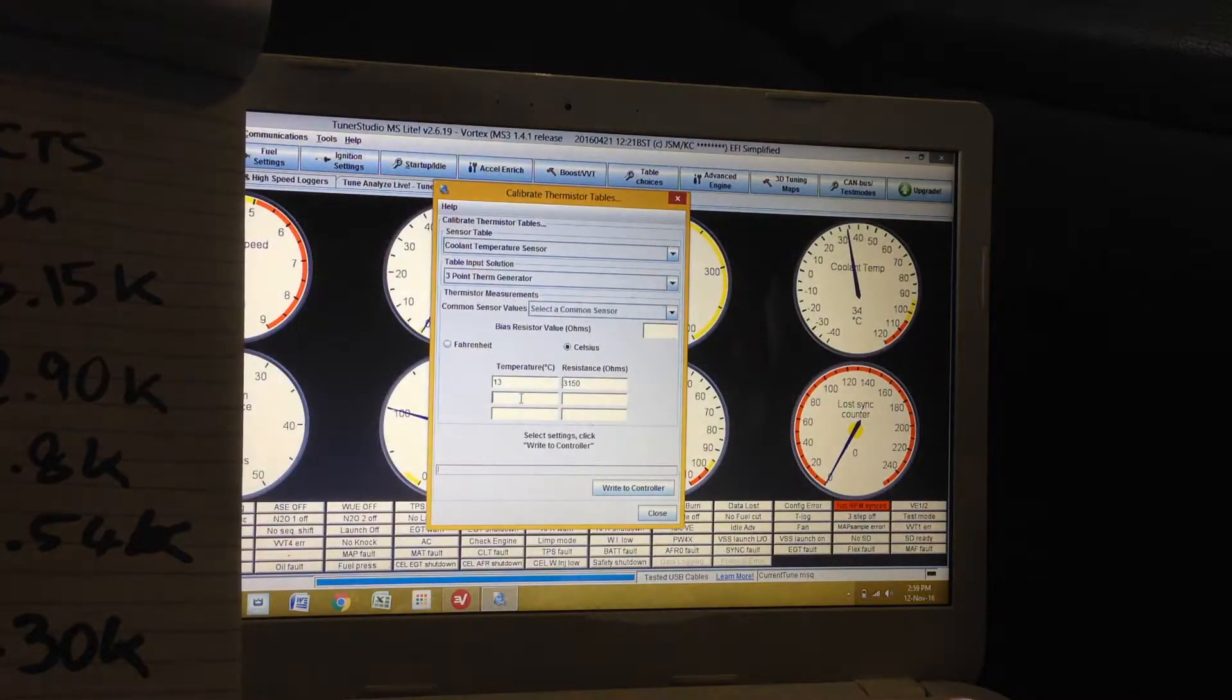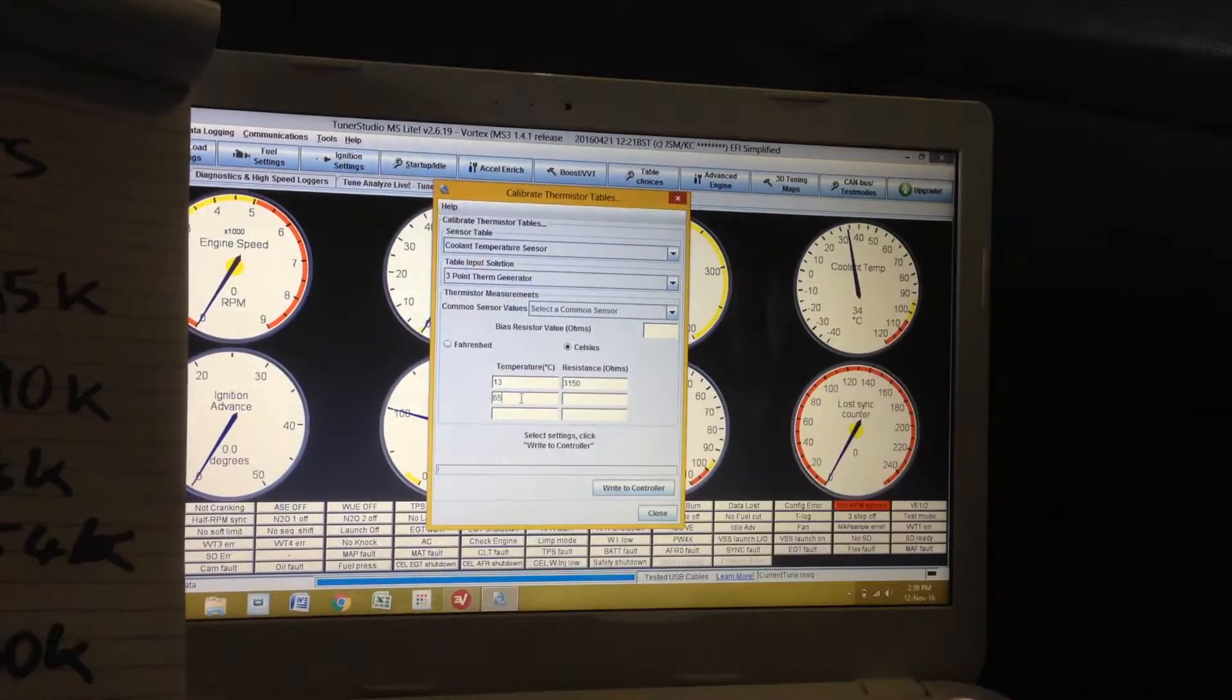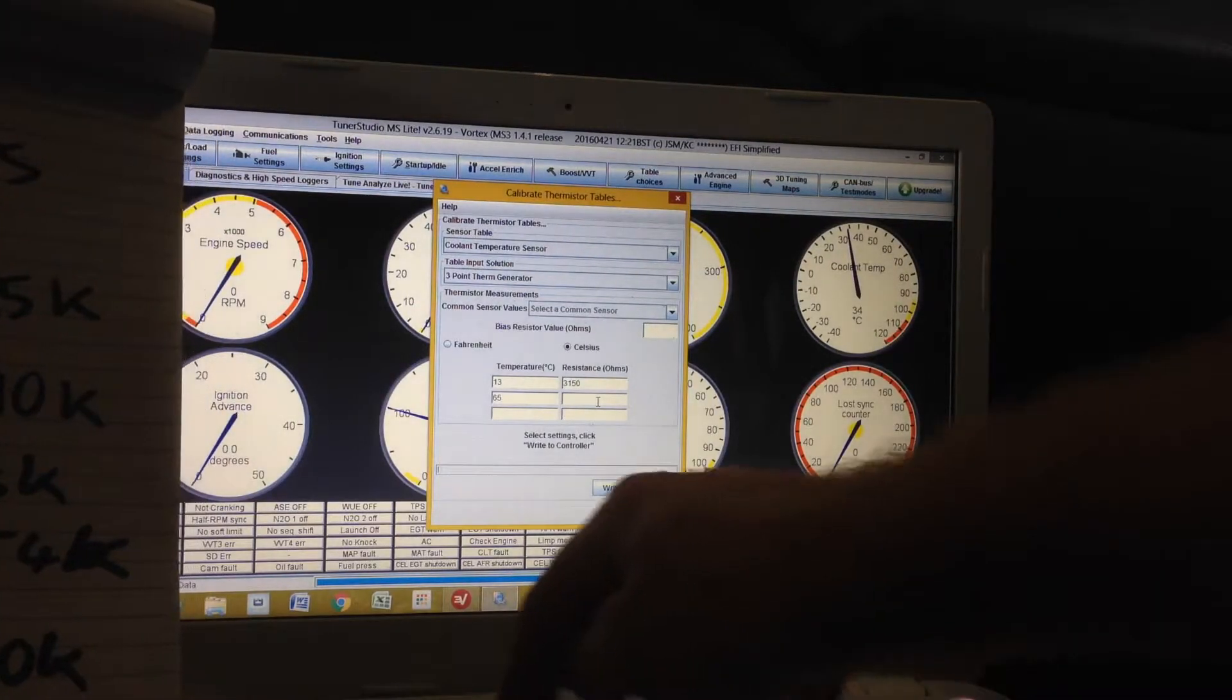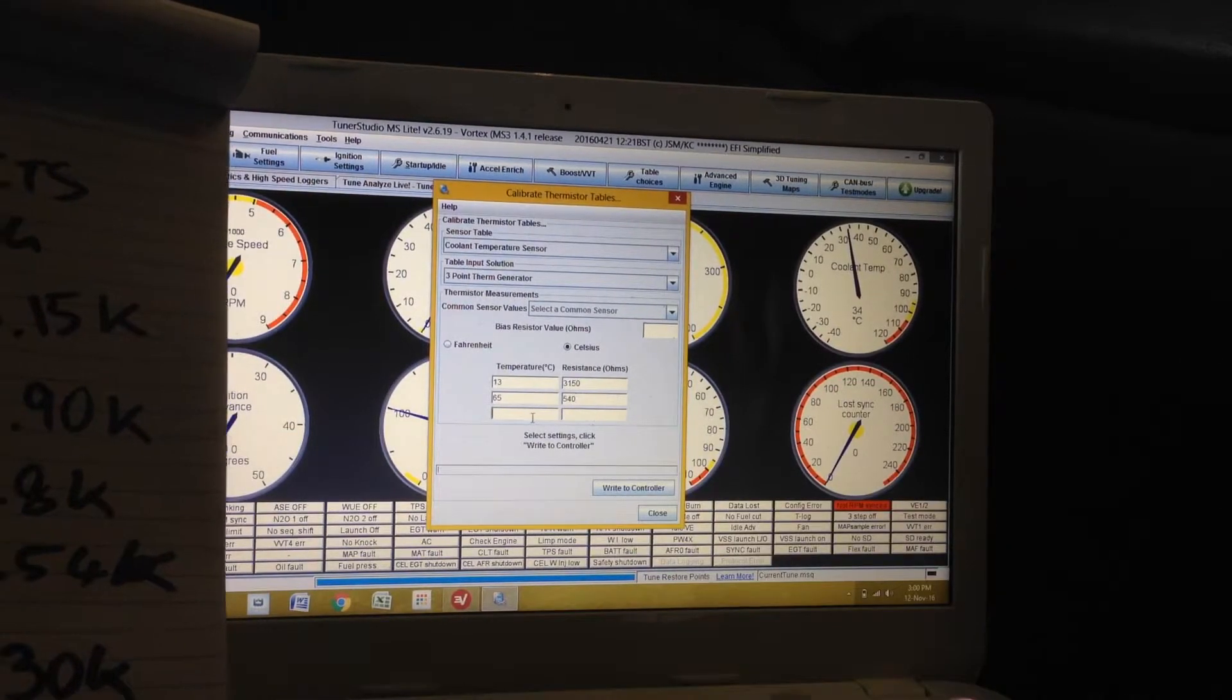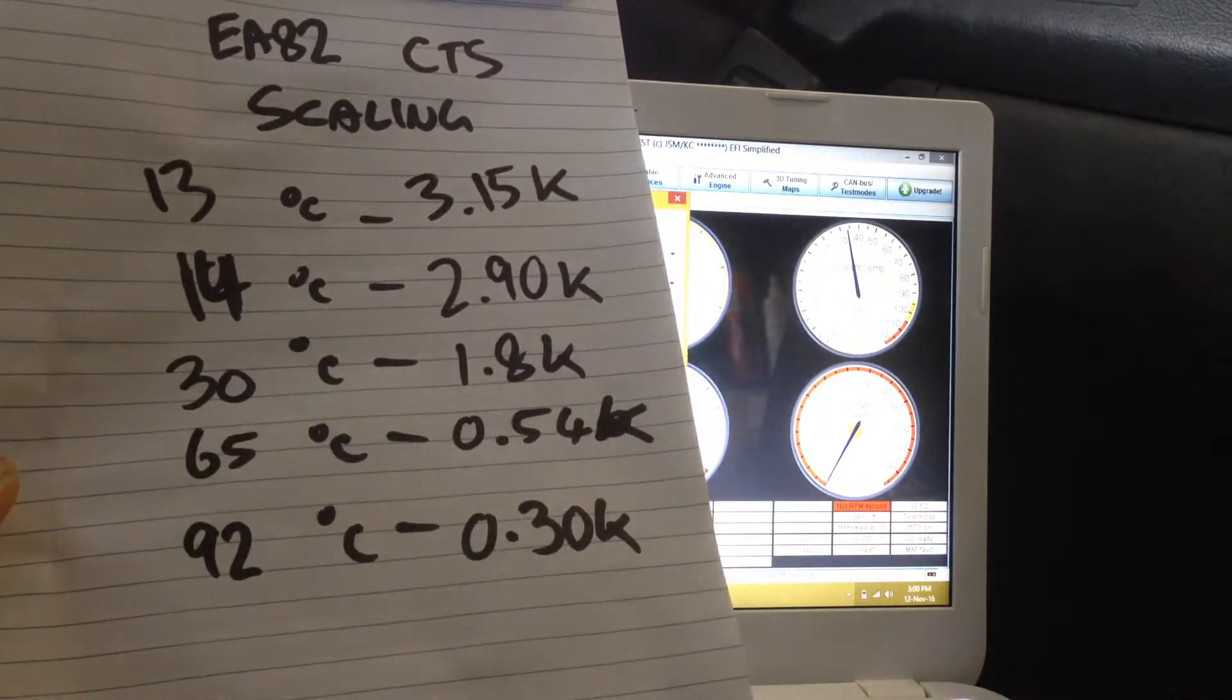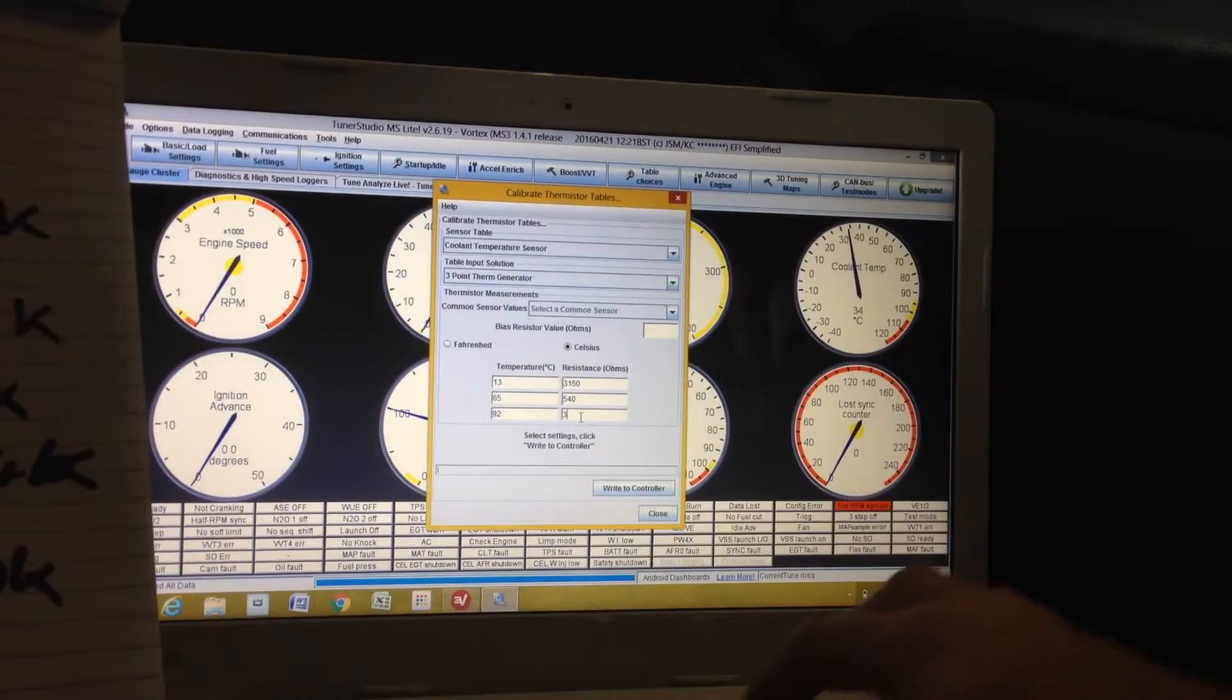Now, somewhere in the middle, I might go 65. It's 540 ohms. And then... There we go. Now I might go 92 degrees. 92 degrees is 300 ohms.